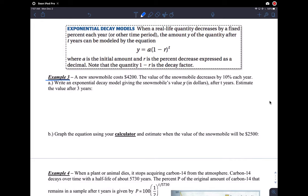So example three, first example says a new snowmobile costs $4,200. The value of the snowmobile decreases by 10% each year. Write the model. So please don't get confused. They're just saying write the model. And then it says estimate the value after three years. Two separate questions there.